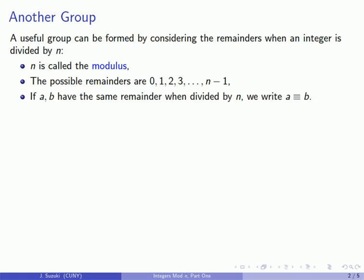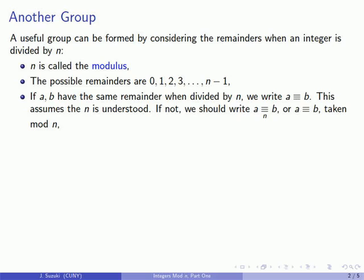If two numbers have the same remainder when divided by n we write a equivalent to b or sometimes we read this as a is congruent to b. This assumes that everybody knows what n is. If not, we should indicate that in some fashion. So we might write a is congruent to b and somehow indicate that there's an n there. Or we might write a is congruent to b taken mod n or we might even write a mod n is congruent to b mod n.